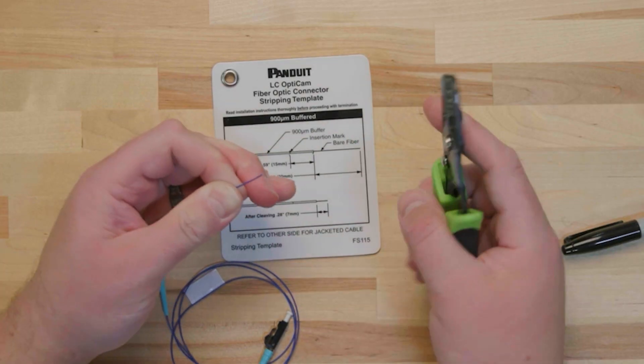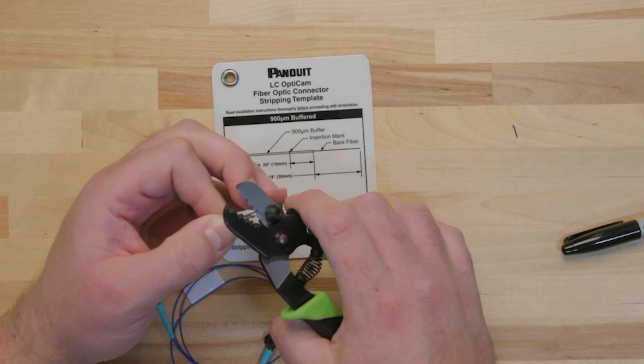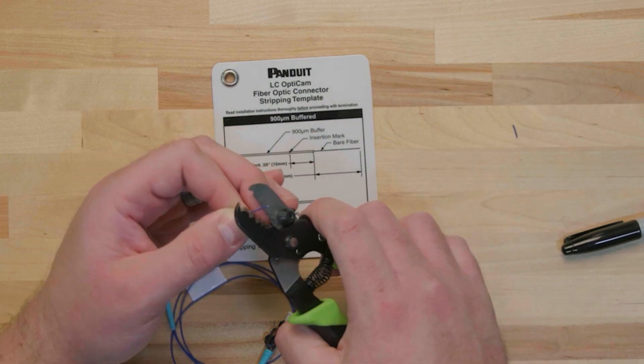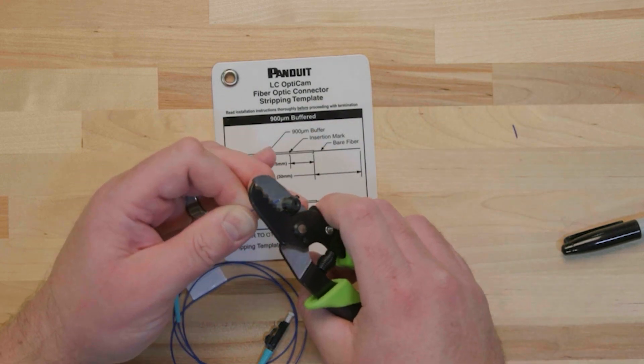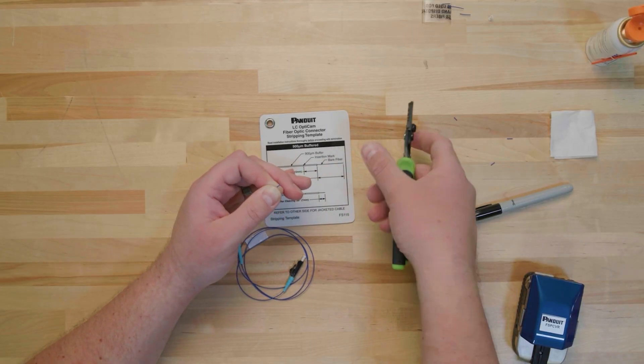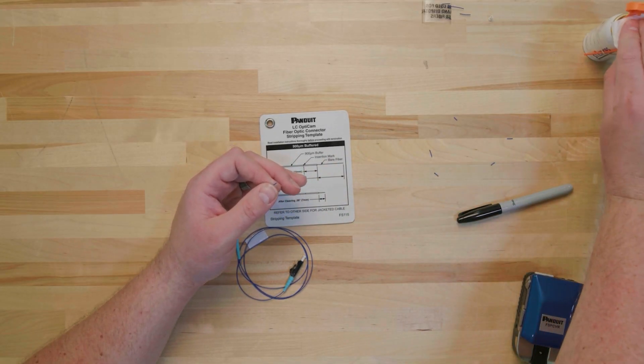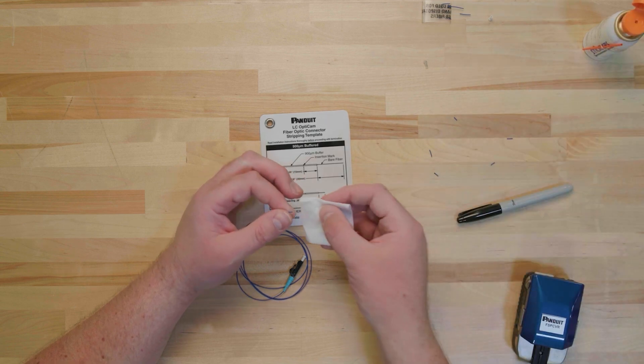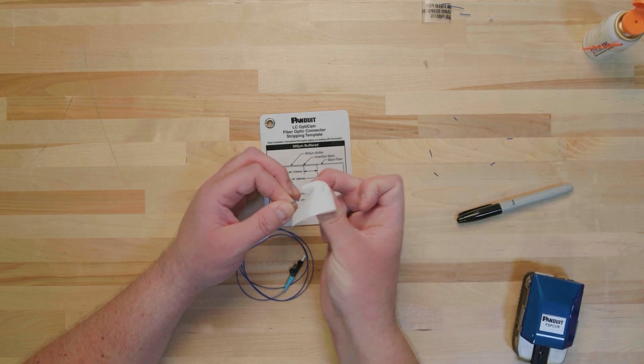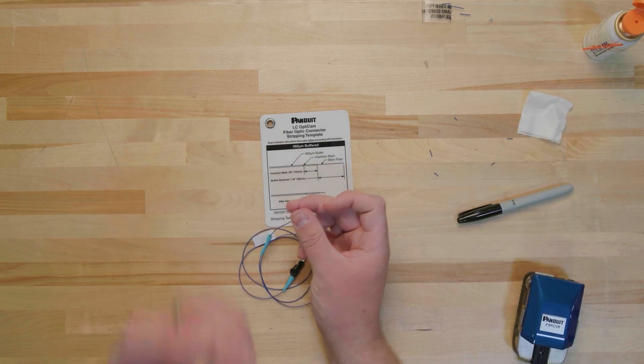Use your strippers to remove the buffer. Place your strippers at 5 to 10 millimeters from the end of the fiber. Use short increments to strip the buffer and acrylate down to bare fiber, 5 to 10 millimeters at a time, all the way to the stripping mark. Once the buffer is stripped, use an approved wipe and cleaning solution to clean any dust, residue, or debris from the bare fiber. Pre-saturated wipes are not recommended.